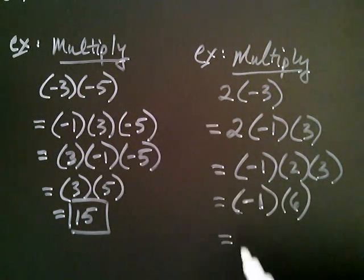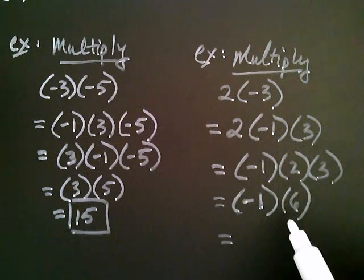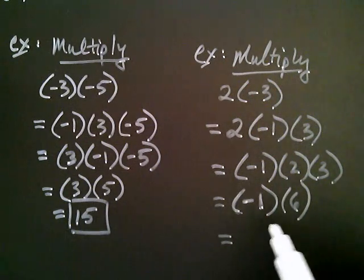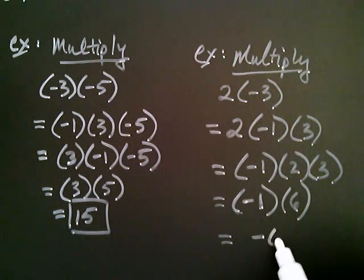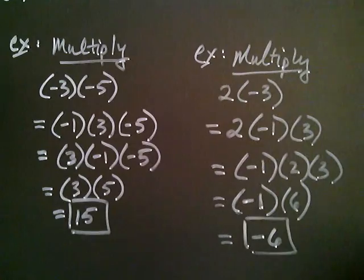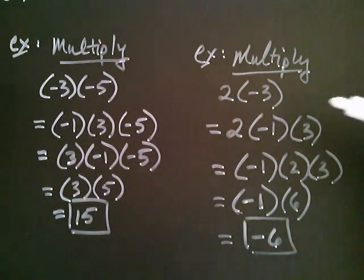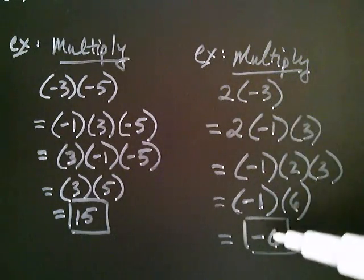And negative one times anything changes the sign. So negative one times six is negative six, and my observation is that a positive times a negative is a negative.